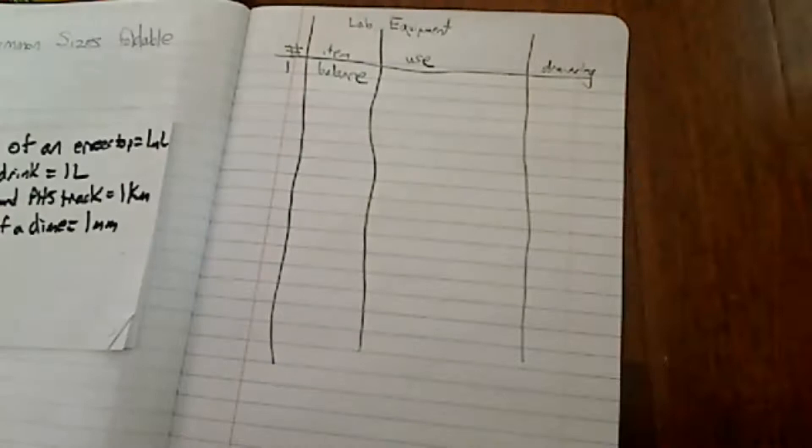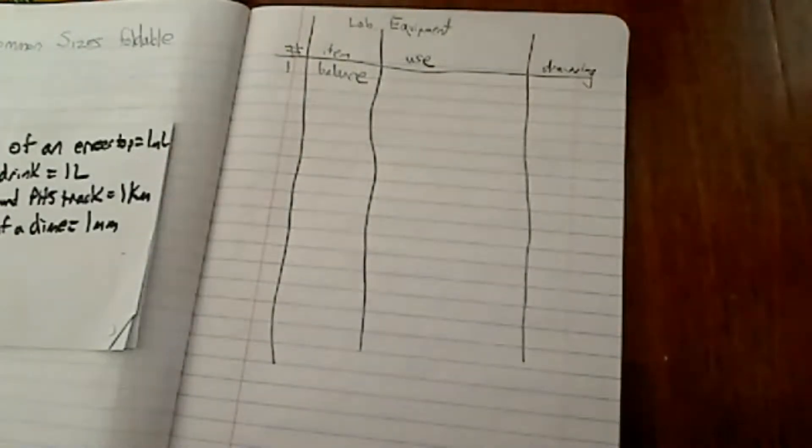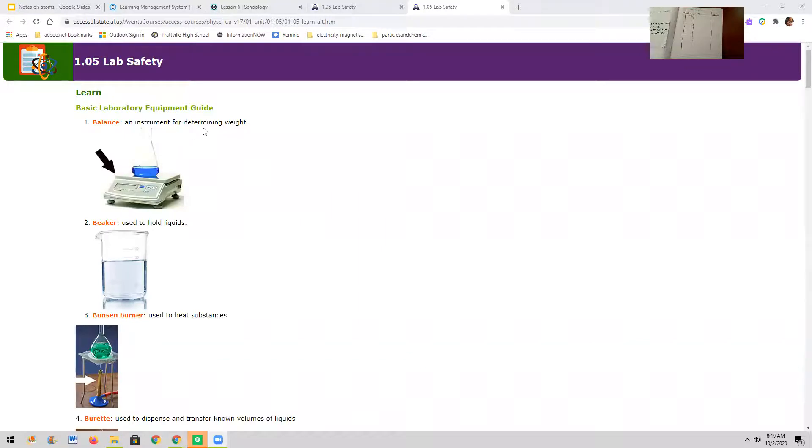And the first item was a balance. Well, what was the use of it? Let's go back and look real quick. Let's look at the use. Share the screen. Let's look at that. Balance is an instrument to determine weight and mass. Now I'm going to go back over here. We'll stop my share here. And it is used to determine weight and mass.